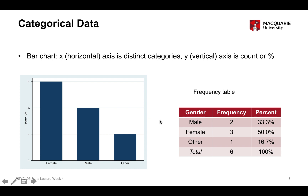The bar chart depicts the exact same thing that the frequency table is doing, just in the form of a graph. Graphs are often a better way to depict information than tables because we tend to get the information more succinctly. The height of each bar represents how many people fall into that category: the female bar goes up to three, male up to two, and other up to one. We'll be using both numeric summaries like tables alongside graphical summaries throughout this semester.